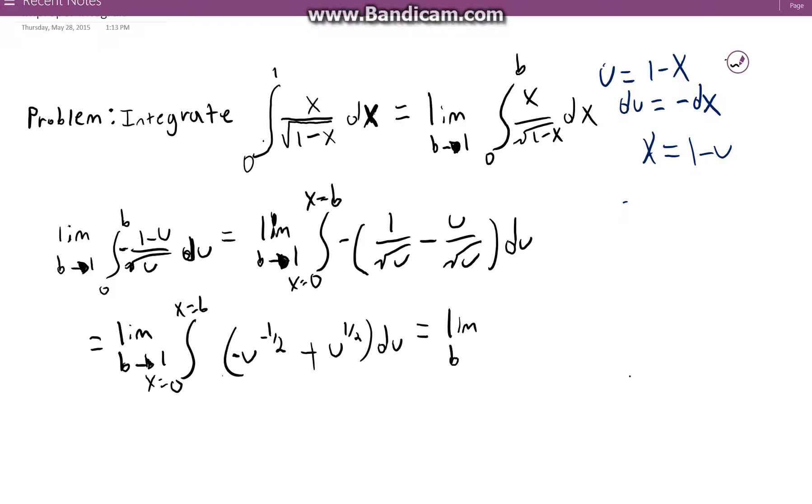The limit as b approaches 1 and now we're going to evaluate this. x is equal to 0, x is equal to b. Actually we won't need this since we are now going to evaluate the integral. So this is going to be 2u to the 1 half plus 2 thirds u to the 3 halves.